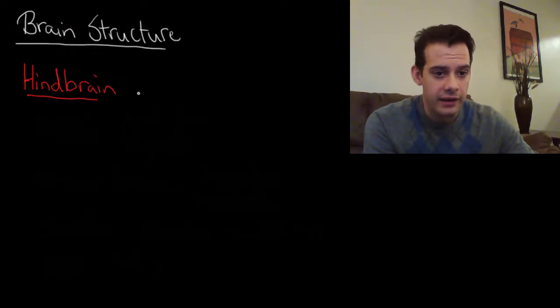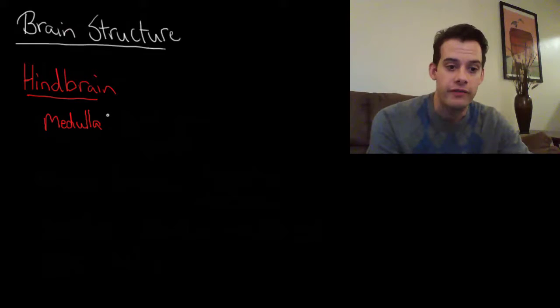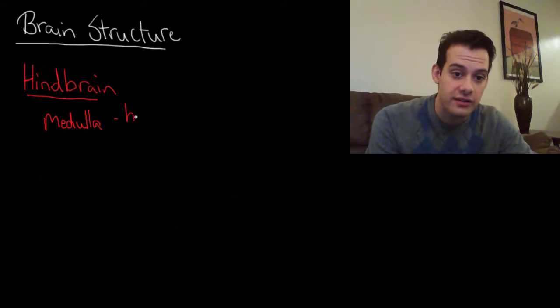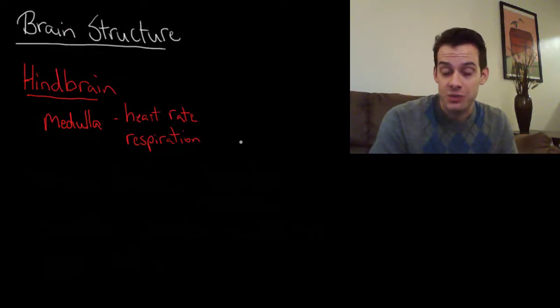So four structures of the hindbrain. The first one that we'll see is the medulla. So if we move up from the spinal cord and we get to the brain stem, one of the first structures that we'll find is the medulla. The medulla is involved in two very important processes. So it's involved in heart rate and respiration, breathing. Now obviously these are two very essential functions. Without these, you can't be alive. So this is obviously a crucial area of the brain.